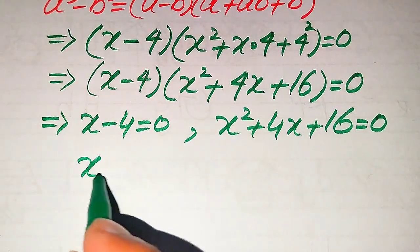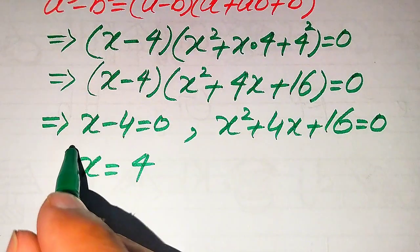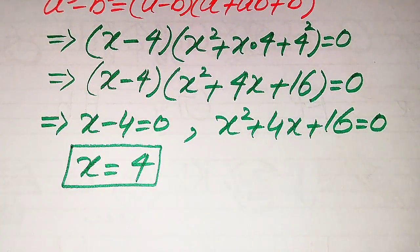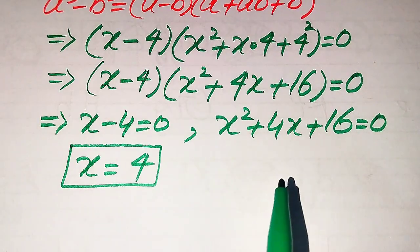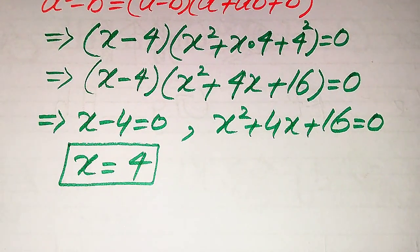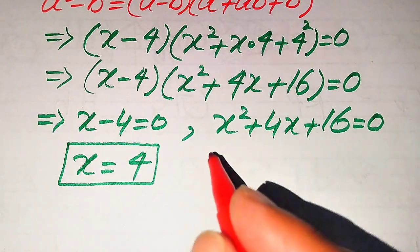From the first case we easily get the value of x is equals to 4, so this is the first root of the given equation. To find the other roots, we need to solve the quadratic equation. There are three ways: factorization, completing the square, and the quadratic formula. Here we use the quadratic formula.